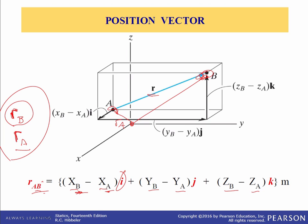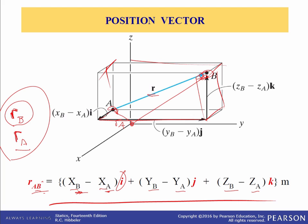We can also form these components directly by inspection. You can just start at A and envision yourself getting to B — there's a box and you travel along the sides to get the length in each direction. You can go from here, over, and then up. Either way works, but it's critical to get it right. If you do it backwards, the direction comes out opposite, which is not good.